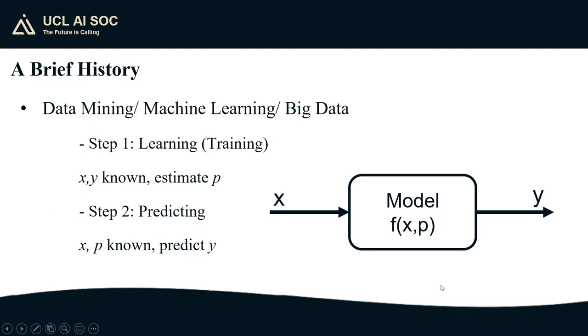From the fields of data mining and big data, machine learning borrows the notion of learning and predicting. Imagine I have some data X that I want to use to predict some quantity Y. I can train a model, which I can denote by f, which takes in X, has some parameters p, and it outputs Y.